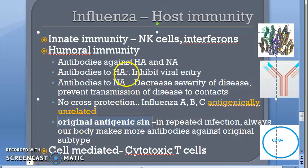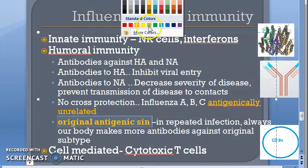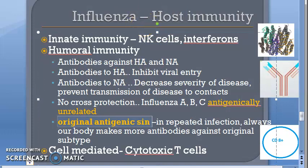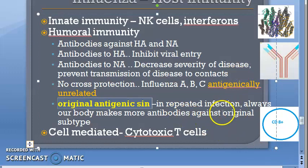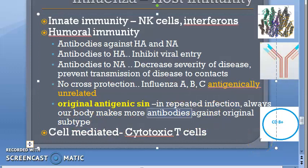An important concept is original antigenic sin. If you are first infected with one subtype and later get a repeated infection with a different subtype, the body makes antibodies against both the original and the new subtype — but it produces more antibodies against the original subtype. This is called original antigenic sin and is seen with the influenza virus.